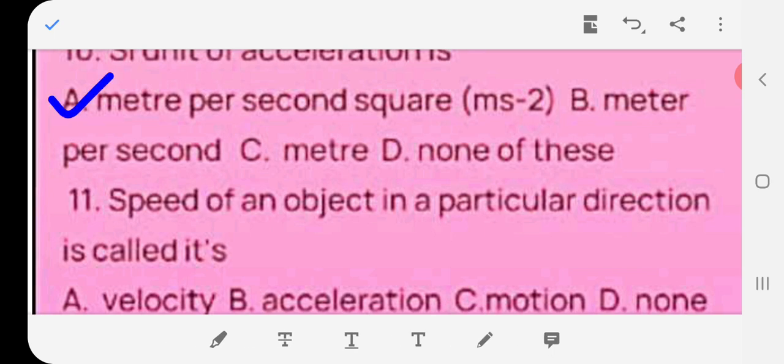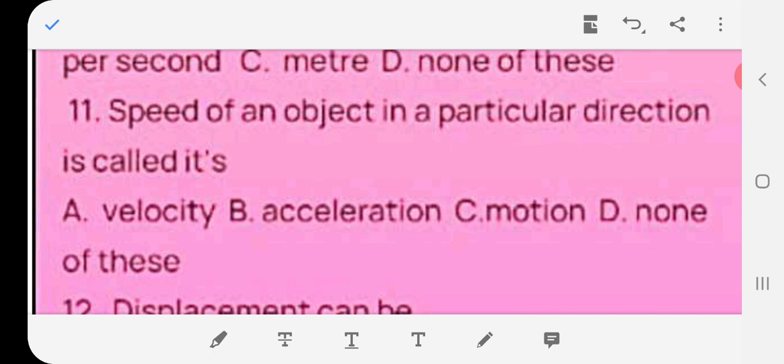The speed of an object in a particular direction is called its A velocity, B acceleration, C motion, D none of these. The correct answer is A velocity.